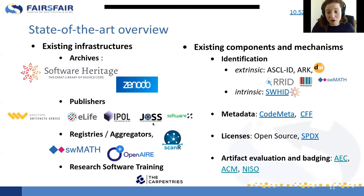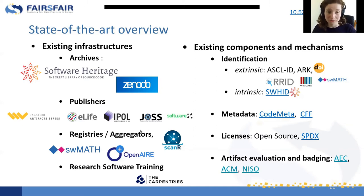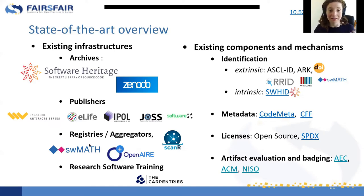With the state-of-the-art overview, we looked at what exists to make software FAIR — information that is sometimes missing in different communities. There are archive infrastructures for software: Software Heritage, Zenodo, with good integration between GitHub and Zenodo. There are publishers that publish software and have ways to make it more FAIR. There are also registries and aggregators that show software as a first-class citizen, and it is important to see how these parts of the existing infrastructure are used by researchers.